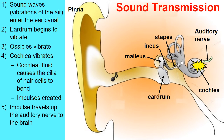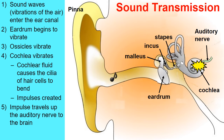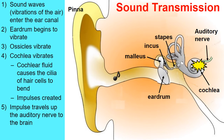Once the hair cells located inside of the cochlea have begun to bend, they create action potentials, or impulses. These travel from the cochlea up the auditory nerve and directly into the brain. It's your brain's job to then interpret this signal as the sounds we hear throughout our day.